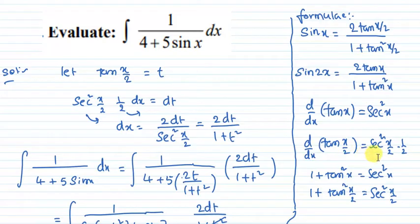The derivative of tan x by 2 is sec square x by 2 times 1 by 2. From trigonometry and first year, the formula 1 plus tan square x is equal to secant square x.